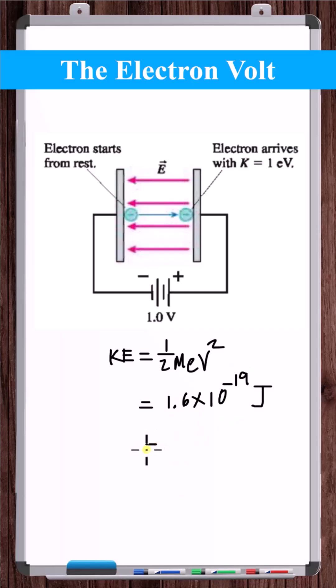This amount of energy is defined to be one electron volt. An electron volt is a unit of energy. Don't confuse this with regular volts. Regular volts have units energy per charge, for example, joules per coulomb.